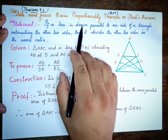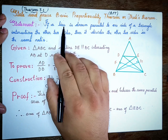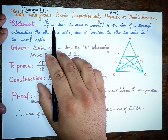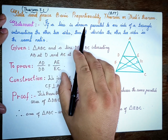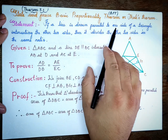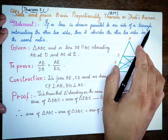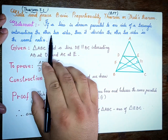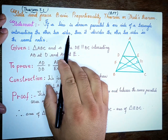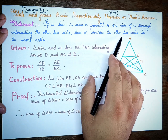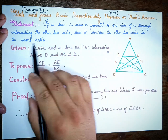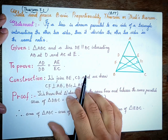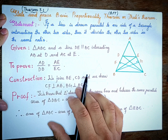If a line is drawn parallel to one side of a triangle intersecting the other two sides, then it divides the other two sides in the same ratio. This is the diagram.